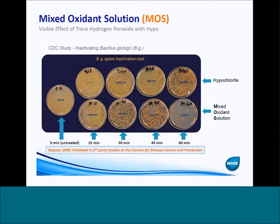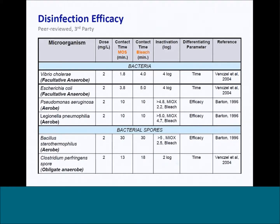In the case of hypochlorite, you have over a thousand colony forming units remaining after 60 minutes, whereas if you did the same disinfection with mixed oxidant solution, you have only 16 colony forming units remaining. These are results that have been validated at third-party studies with the Center for Disease Control. We have a lot of third-party and peer-reviewed disinfection efficacy studies that have been done — this is a small subset of those — just to confirm that we've done a lot of research and partnership with academia to validate our results.